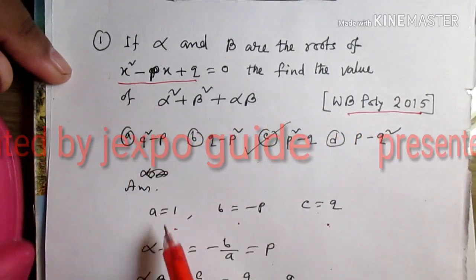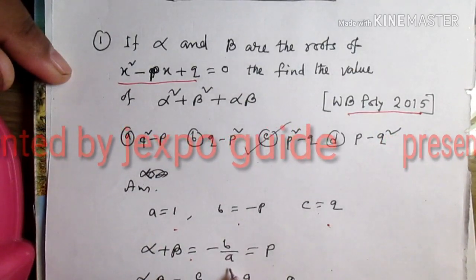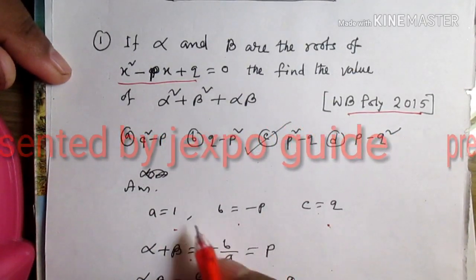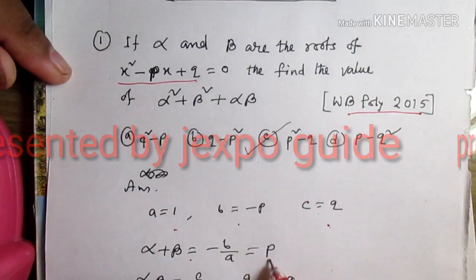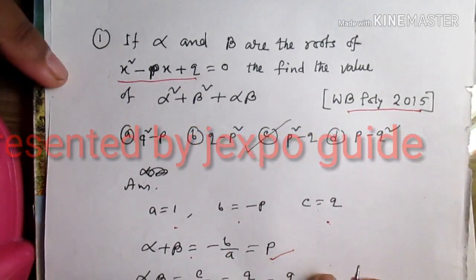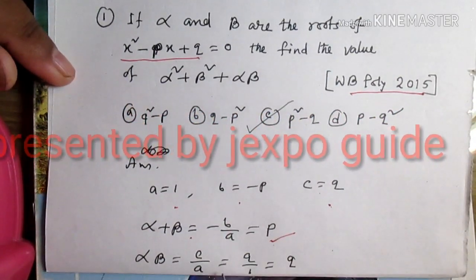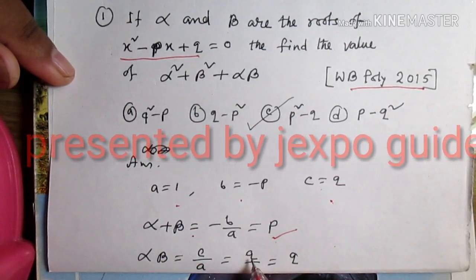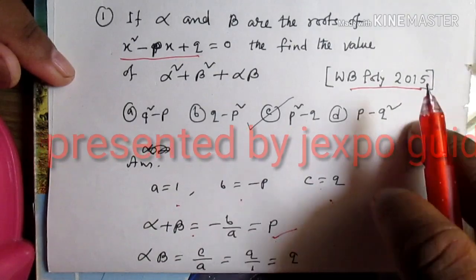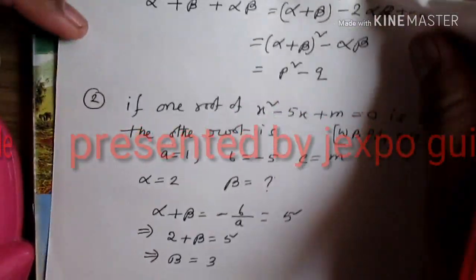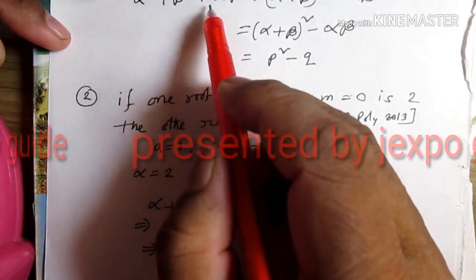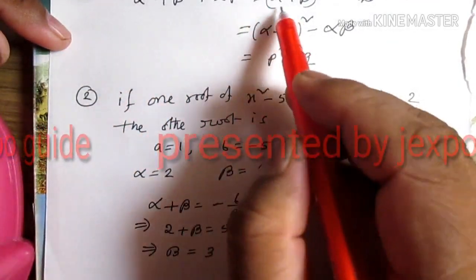Alpha plus beta is equal to minus b by a. The answer expression we need is alpha squared plus beta squared plus alpha beta.